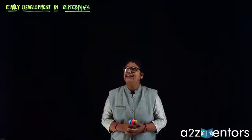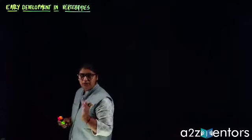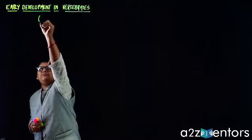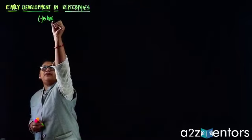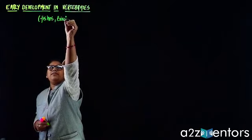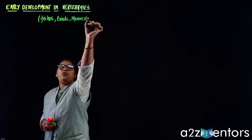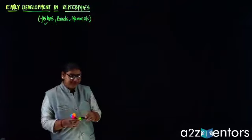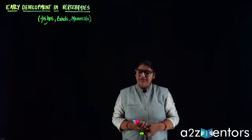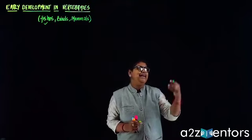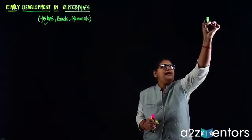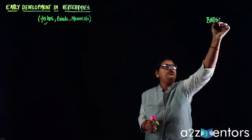Hello friends, continuing our lecture on early development in vertebrates. We have already discussed about fishes. When we discuss vertebrates, we'll be discussing fishes first, then birds, and last mammals. We have already discussed cleavage, gastrulation, and axis formation in fishes. Now we'll be starting with the development happening in birds, and exclusively we'll be talking about chick.